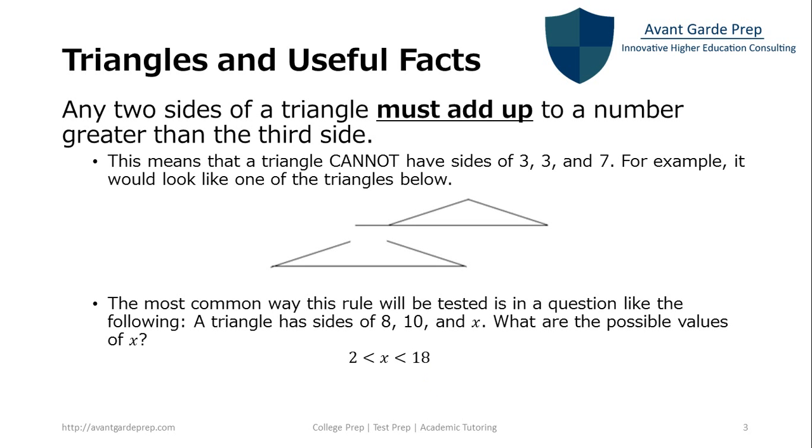With this problem, we'll choose on the low end 3. If you add 8 and 3, that's 11, which is greater than 10. On the other hand, if you add 10 and 3, that adds to 13, which is greater than 8. So on the low end, x has to be greater than 2.